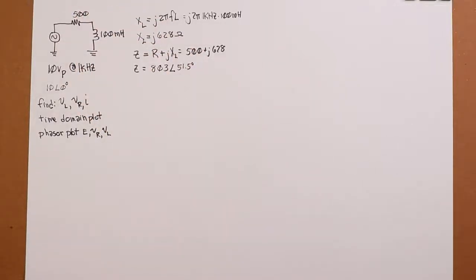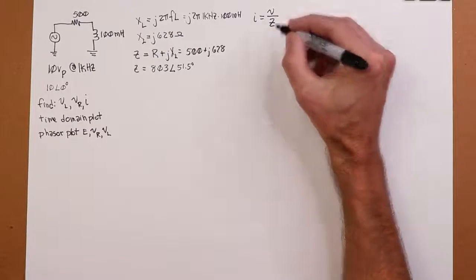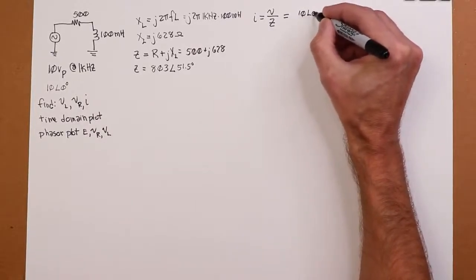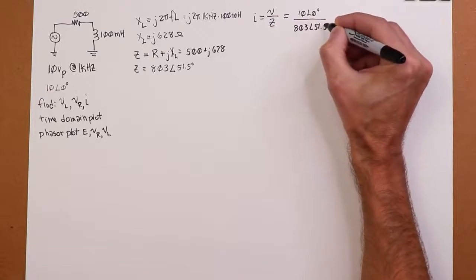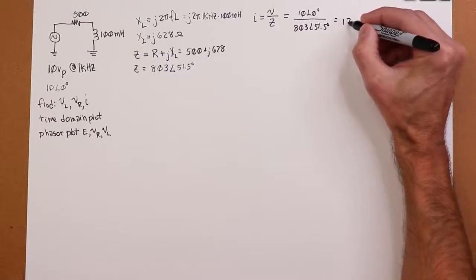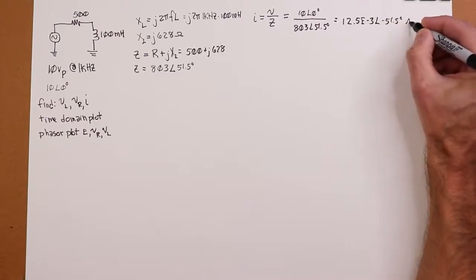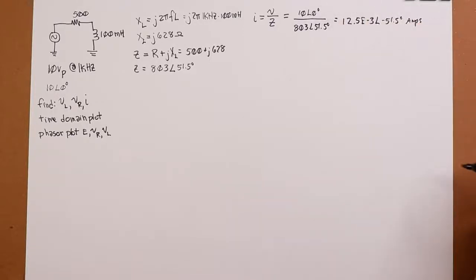Well, we use the same essential relations and rules that we would use in DC circuits. In other words, Ohm's law is still true. Kirchhoff's voltage law is still true. So we can go about it that way. Probably the most straightforward way, given what we're asking here, would be to find the current first. So current is still going to be voltage divided by resistance, or in our case, impedance. The voltage is 10 at an angle of zero. And then the impedance, because we're going to divide, it's convenient to have in polar form, 803 at an angle of 51.5 degrees. And that's going to work out to approximately 12.5 milli at an angle of negative 51.5 degrees.